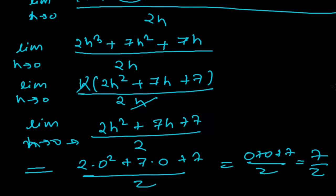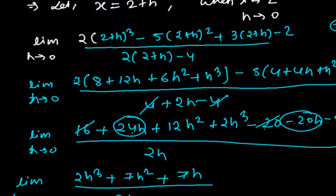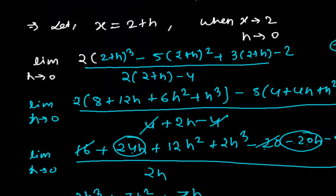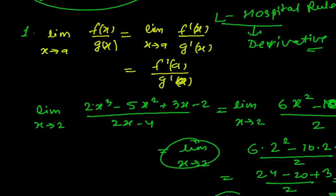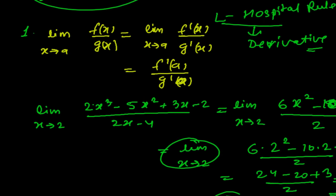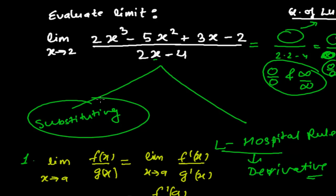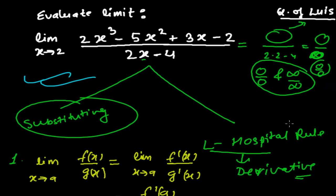So we get 7/2 by the substitution method as well. In this type of problem, there are only two methods — substitution method or L'Hôpital's rule. Since you haven't learned derivatives yet, you'll be using the substitution method. Once you're comfortable with derivatives, you can easily use L'Hôpital's rule. I hope you learned this, Mr. Louis — please reply after watching this video. See you in the next video, bye!